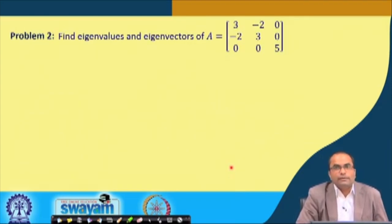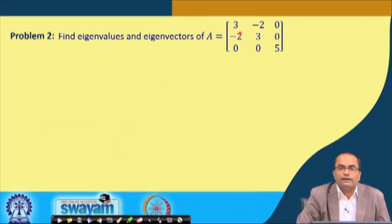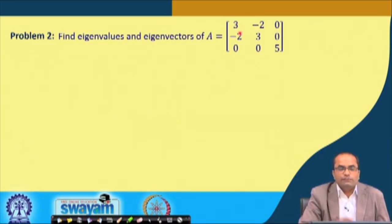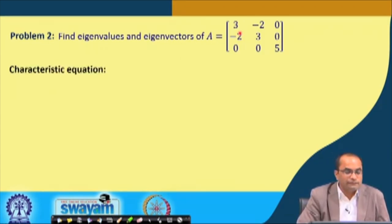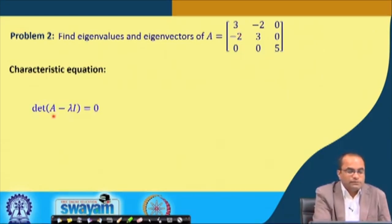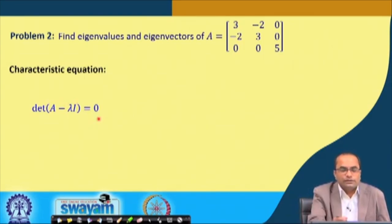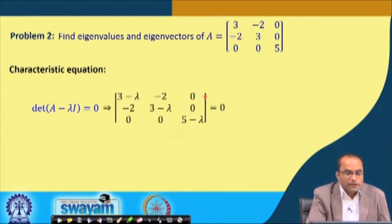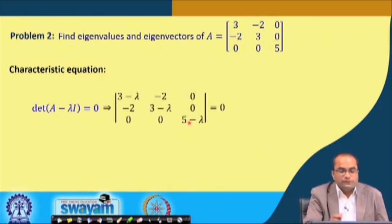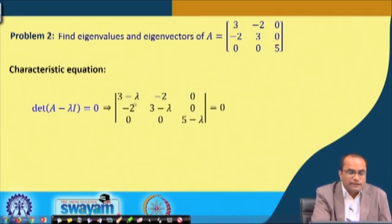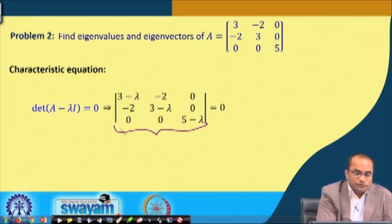Another problem: this is a 3 by 3 matrix with entries 3, minus 2, 0 in the first row, minus 2, 3, 0 in the second row, and 0, 0, 5 in the third row. We want to find eigenvalues and eigenvectors. The characteristic equation is the determinant of A minus lambda I equals zero, subtracting lambda from the diagonal entries 3, 3, and 5.